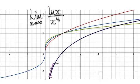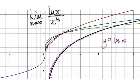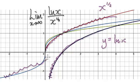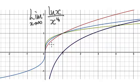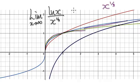This line here is the natural log of x, so this is y equals natural log of x. This red line here is x to the power of a half. This blue line here is x to the power of a third. And then this green line here is x to the power of 1 over 4.